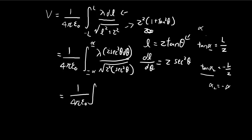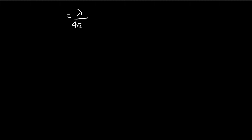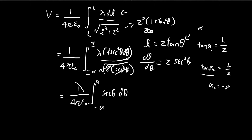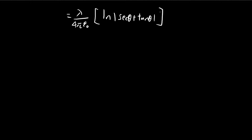Let's simplify: the Z squared and the square root cancel the Z terms, and with secant squared in the numerator and one secant from the square root, one secant cancels, leaving us with the integral of lambda times secant theta from negative alpha to alpha. Integrating secant theta gives the natural log of the absolute value of secant theta plus tangent theta. You can look this up, or prove it by multiplying numerator and denominator by secant theta plus tangent theta and applying substitution.